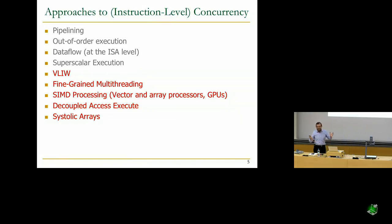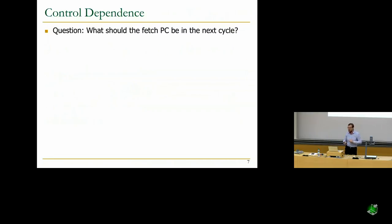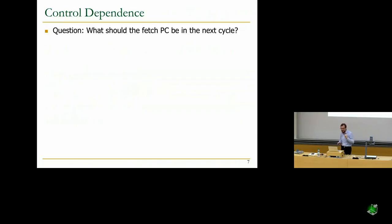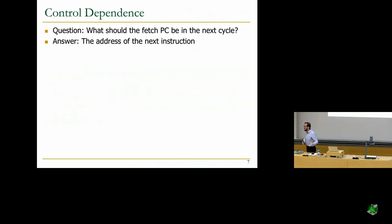Branch prediction essentially means control dependence handling. Control flow instructions are branch instructions or jump instructions. Jump instructions are unconditional branches. The key question we're going to try to answer is: what should the fetch PC be in the next cycle? You fetch an instruction — what should the next program counter be? The answer is obvious: the address of the next instruction you should fetch and execute.